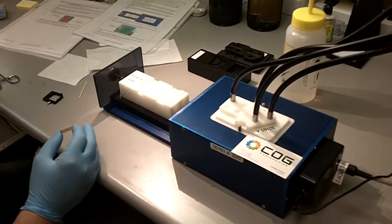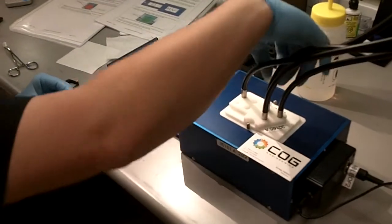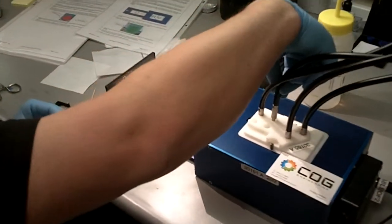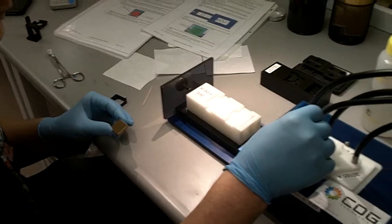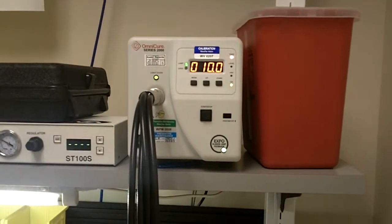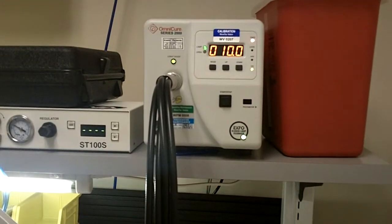So we're about to do UV bonding of an optical assembly. In this case, we're putting a mirror into an optical mount and we're using a spot cure system, this one provided by Omnicure, and the light guides, as you can see,